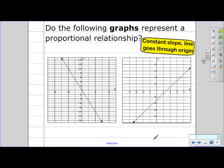Do the following graphs represent a proportional relationship? In a proportional relationship, you need a constant slope, which means a straight line, and the line also needs to go through the origin.